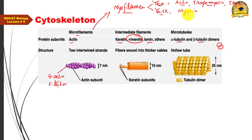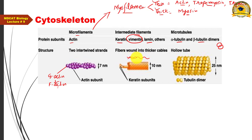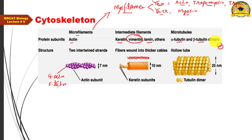Intermediate filaments — made of vimentin or keratin — form a compact structure where the molecules wrap around each other. Microtubules form when tubulin dimers wrap around a central axis, creating a hollow tube-like structure known as the microtubule.